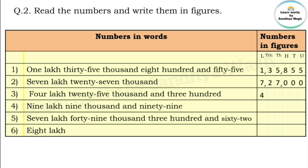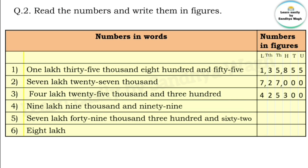Next number: four lakh twenty five thousand three hundred. Lakhs: four, write 4 in the lakhs place. Twenty five thousand has two ten-thousands and five thousands, so write 2 and 5. Then three hundred — write 3 in the hundreds place. Tens and units were not mentioned, so write zeros in those places. The number is 4,25,300.